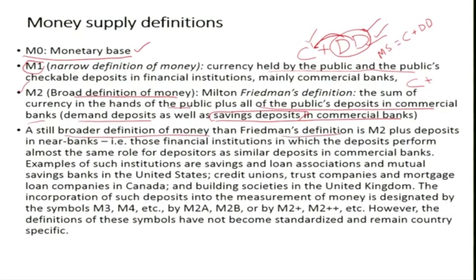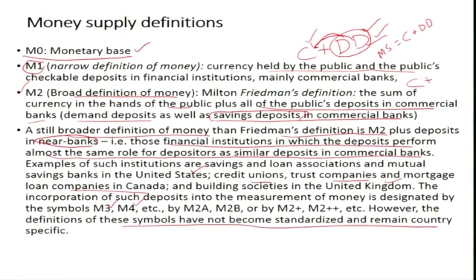A still broader definition is M2 plus deposits in near-banks — non-banking financial institutions in which deposits perform almost the same role as deposits in commercial banks. Examples include savings and loan associations and mutual savings banks in the United States, credit unions, trust companies, and mortgage loan companies in Canada, and building societies in the UK. There are further definitions — M2, M3, M4 — though the symbols have not become standardized and remain country-specific.